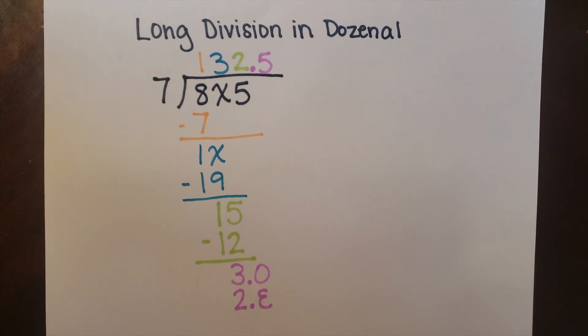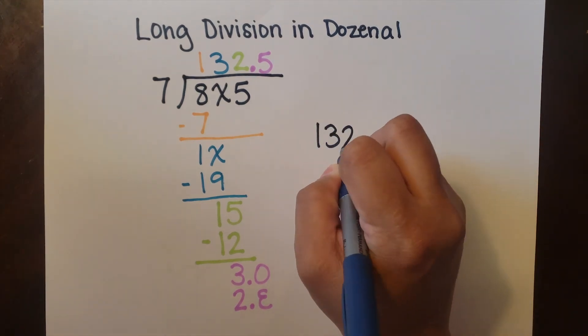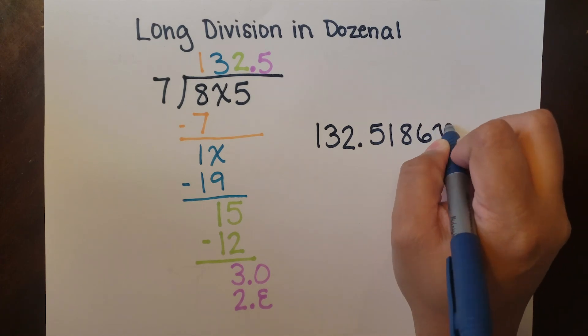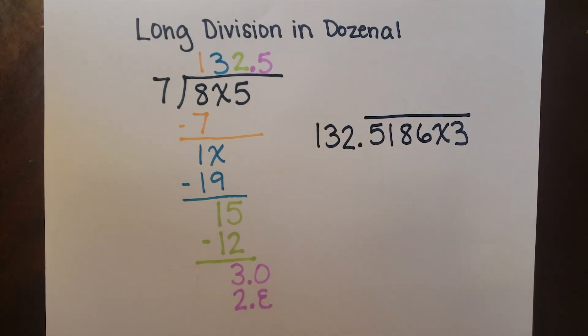I'll go ahead and save you some time with this one. It does eventually repeat at point five one eight six deck three. If we wanted to take the time we could have worked it out just like we would in base ten.